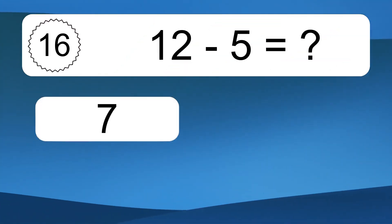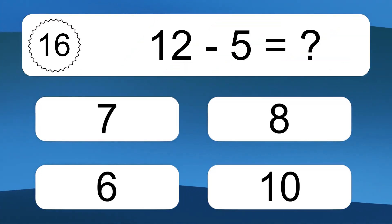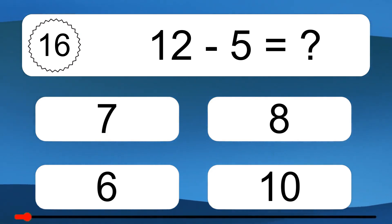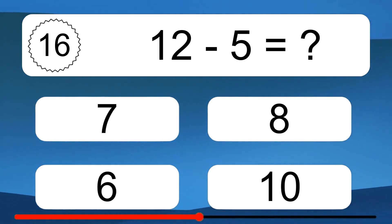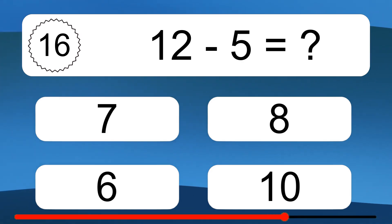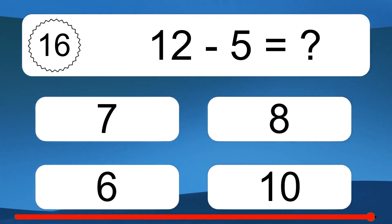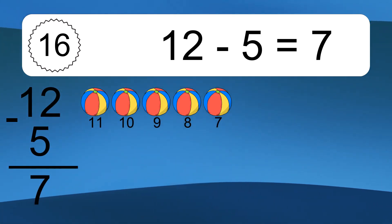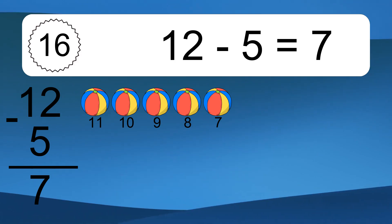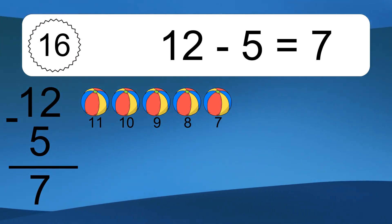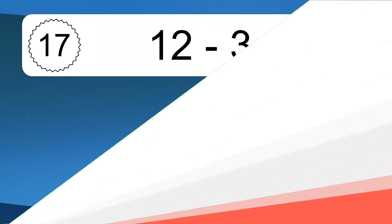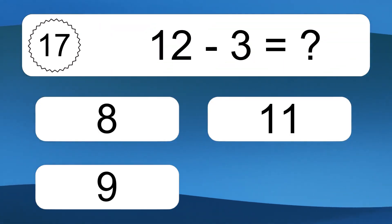12 minus 5 equals what? 12 minus 5 equals 7. Let's count it. 11, 10, 9, 8, 7.